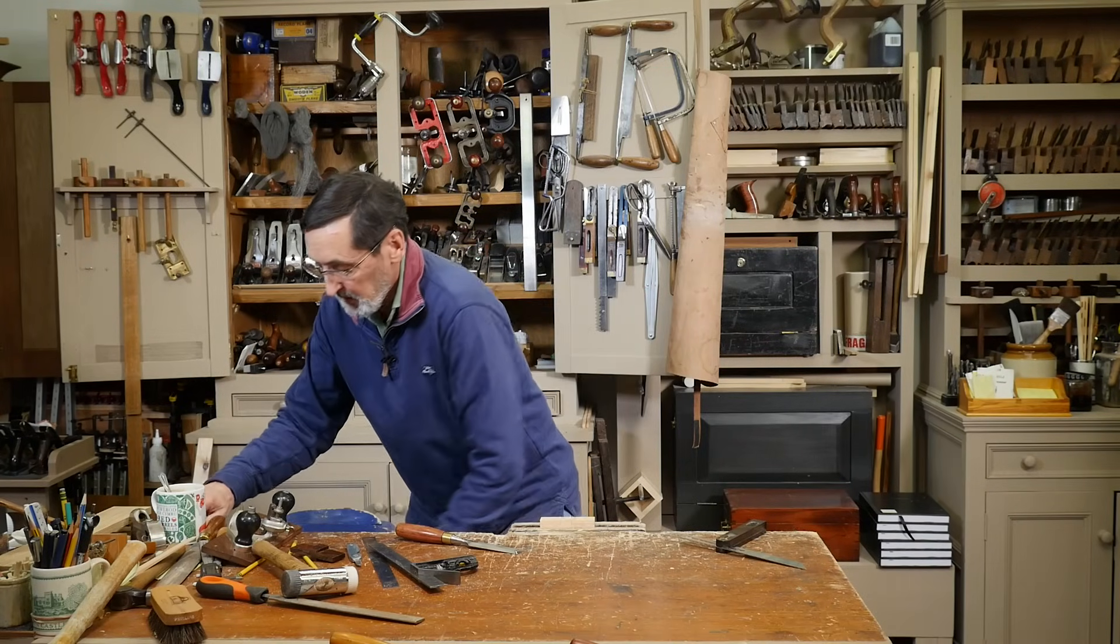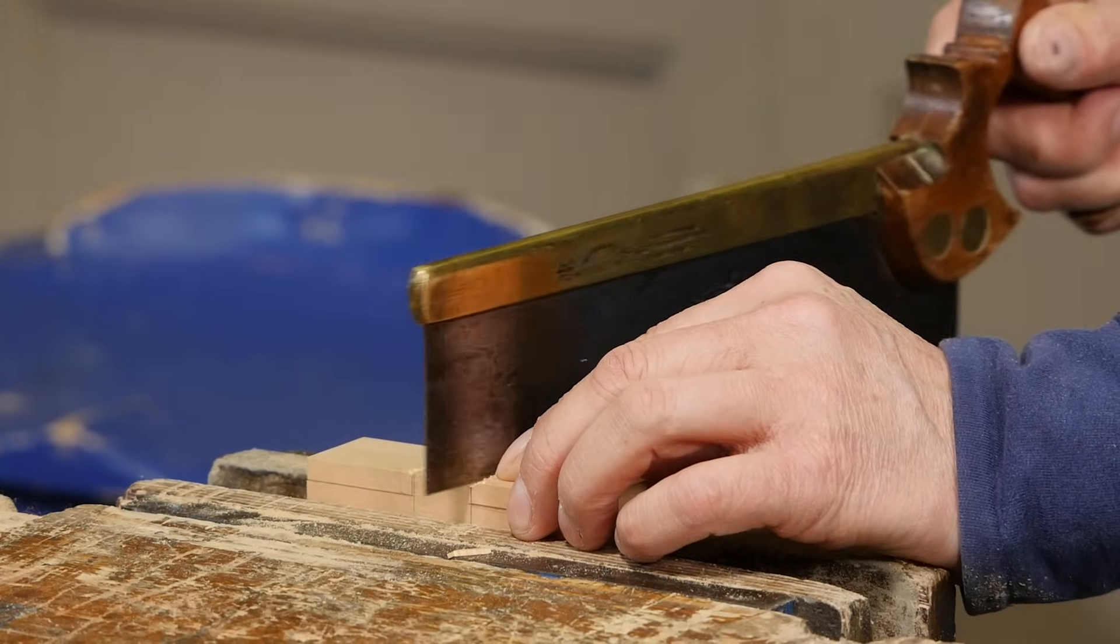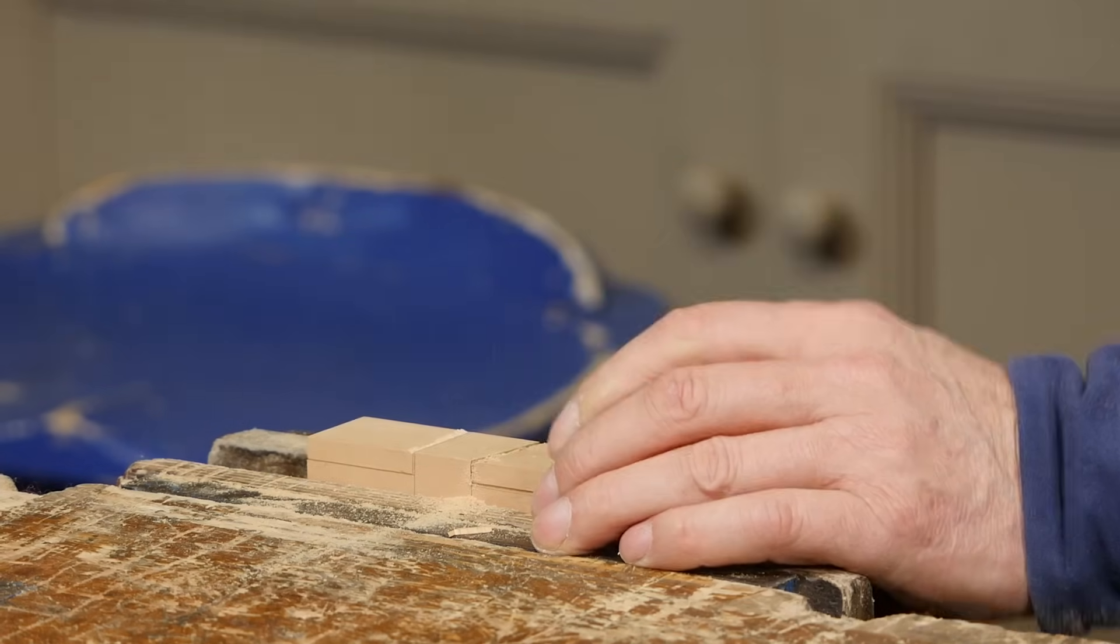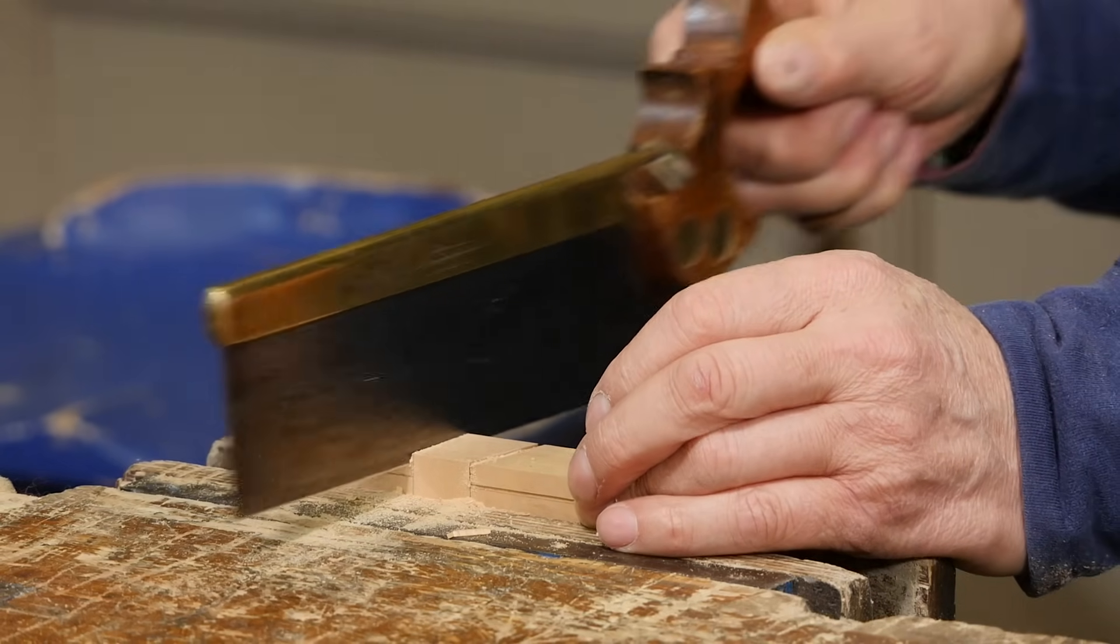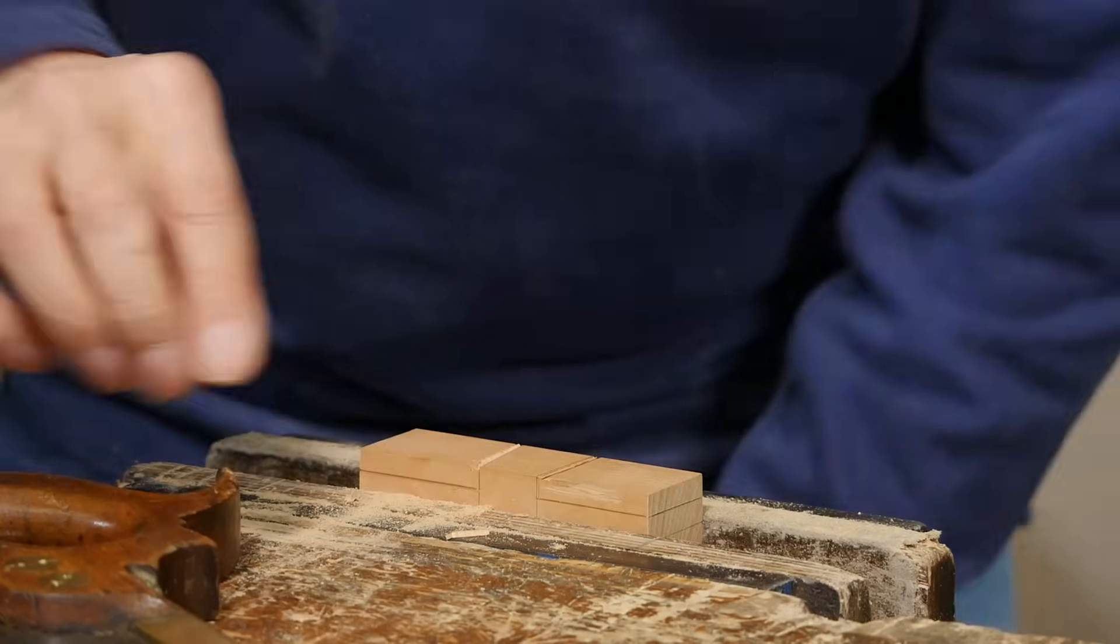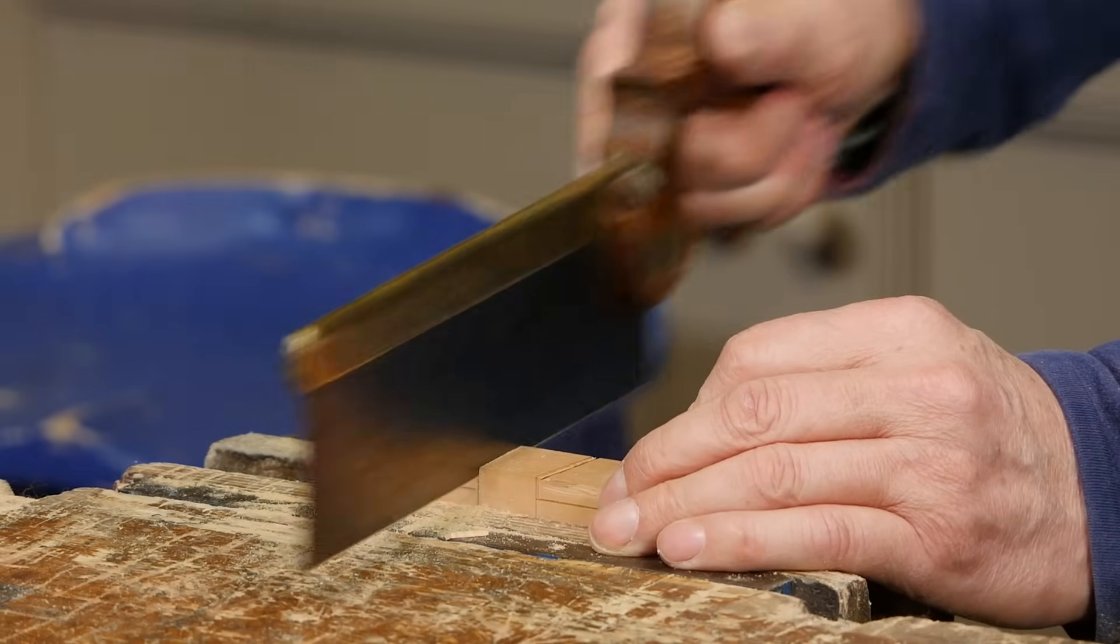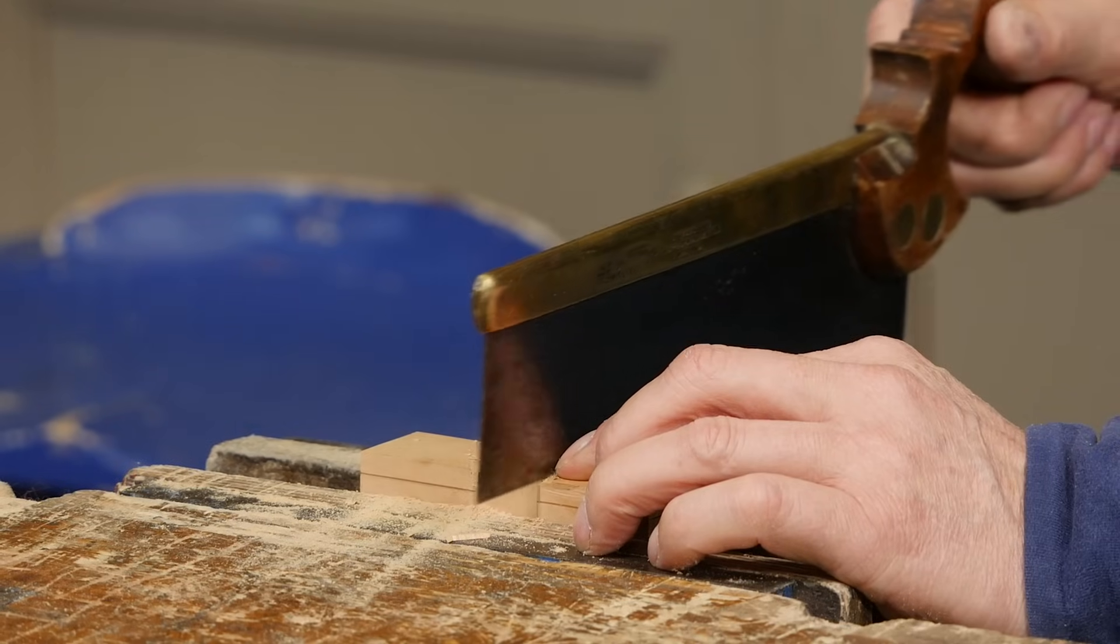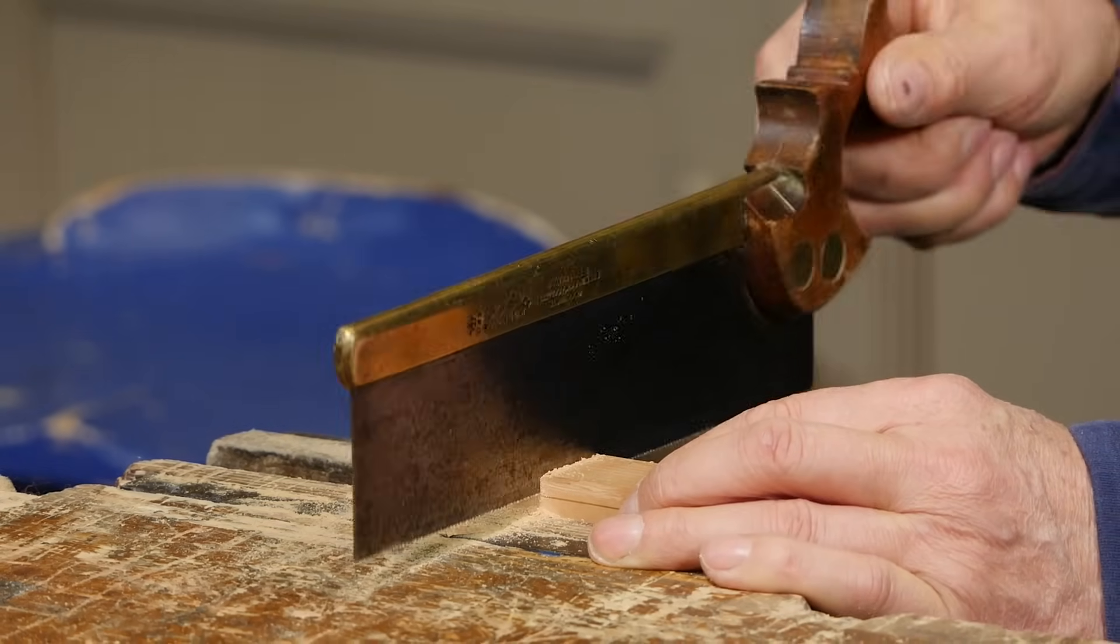I'm going to do my cross-grain cut first and I'm going to use a dovetail saw. Drop this in, push it up against the knife wall. Gently, let the saw do the work. Make sure you don't go past your depth line. If anything, stay shy of your line by a millimeter because you can chisel out that internal corner very easily. Finger against the side of the plate, that just stops the saw from jumping out and it helps you to guide it.